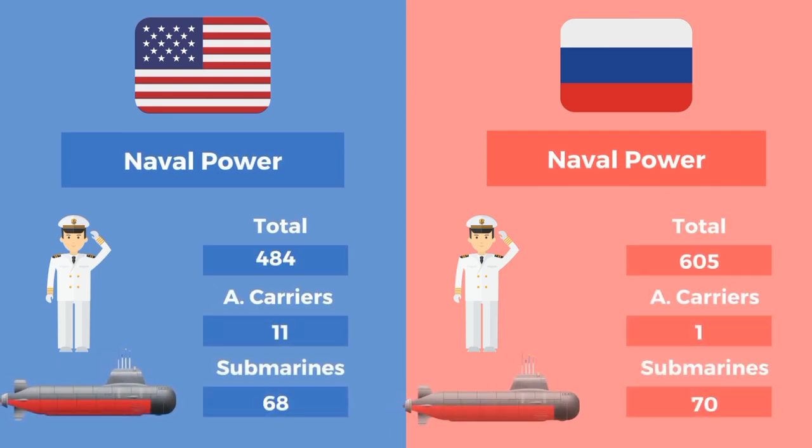Naval power of the US: total 484 vessels, 11 carriers, and 68 submarines. Naval power of Russia: total 605 vessels, 1 carrier, and 70 submarines.